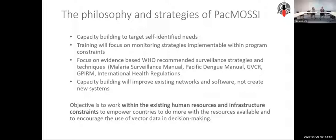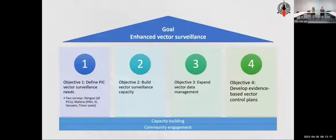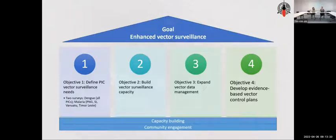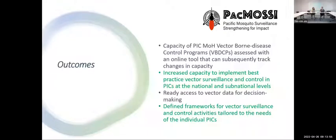All of this focuses on evidence-based WHO strategies and techniques, and it's very much around capacity building. We'll use existing networks and software — there's no creating of new systems through PAC MOZI. It links very closely to the global and regional vector control strategies. The four objectives of PAC MOZI are vector surveillance needs, vector surveillance capacity, vector data management, and evidence-based vector control plans, with capacity building and community engagement as strong foundations.